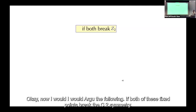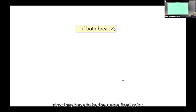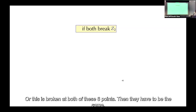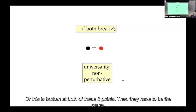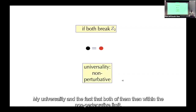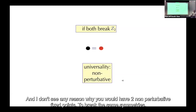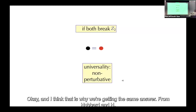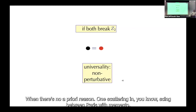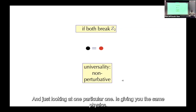I would argue: if both fixed points break the Z_2 symmetry, then they have to be the same fixed point. Both are in the non-perturbative limit. I don't see any reason why you would have two non-perturbative fixed points breaking the same symmetries. That's why we're getting the same answer from Hubbard and HK when there's no a priori reason why momentum scattering versus diagonal-in-momentum treatment should give you the same physics.